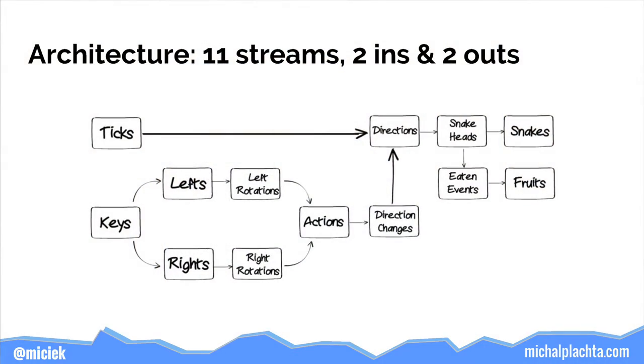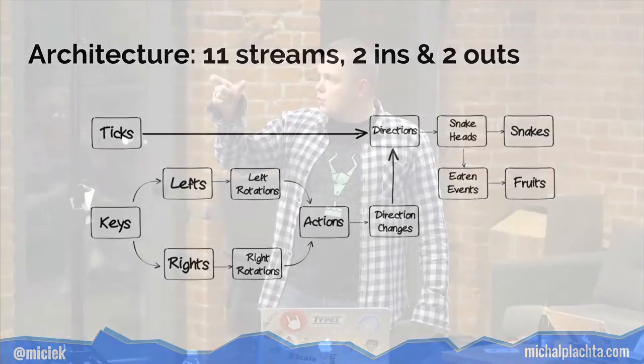The architecture of the stream-based application can be pictured as a flow. The two streams on the left are input streams based on outside-world values — ticks based on the clock, and keys based on user input. All other streams are derived from those two or from others in the pipeline. Arrows represent operators like filter, map, scan, and sampled-by. The rectangles are the streams themselves, and the rightmost streams — snakes and fruits — are used by the outside world.